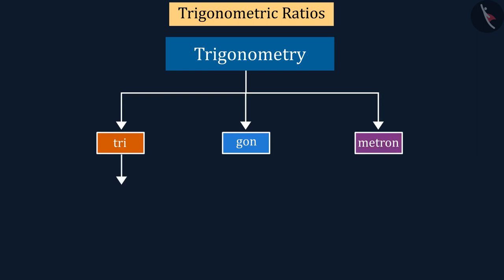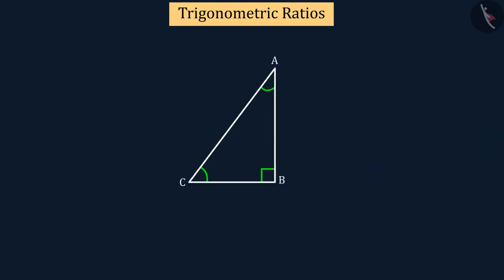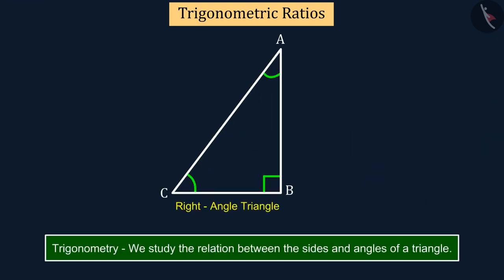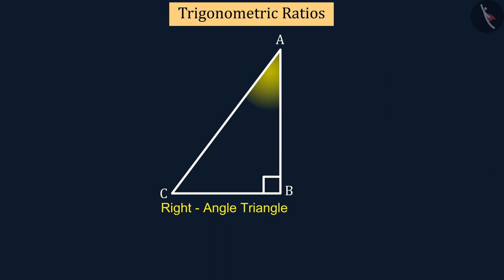In which tri means three, gon means side, and metron means measure. In fact, in trigonometry we study the relation between the sides and angles of a triangle. Let us now consider this right angle triangle.